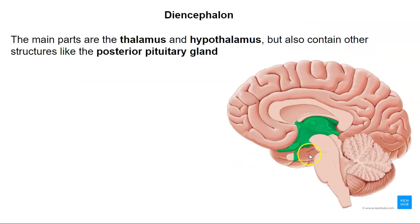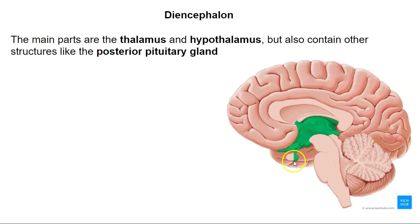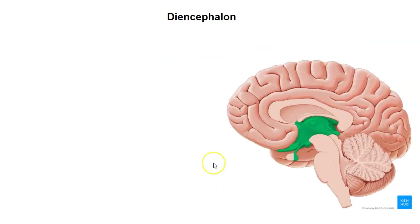First, the diencephalon, highlighted in green. The main parts are the thalamus, and then below the thalamus is the hypothalamus. It also includes other structures like the posterior pituitary gland, the pineal gland, the mammillary bodies, and a few other things. But we'll focus on three: the thalamus, hypothalamus, and posterior pituitary gland.